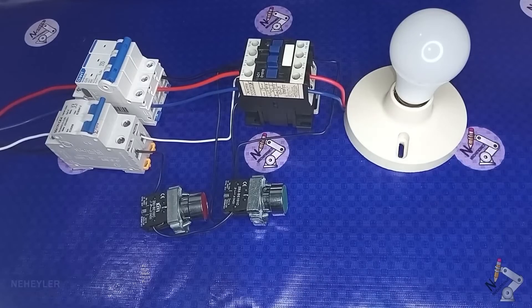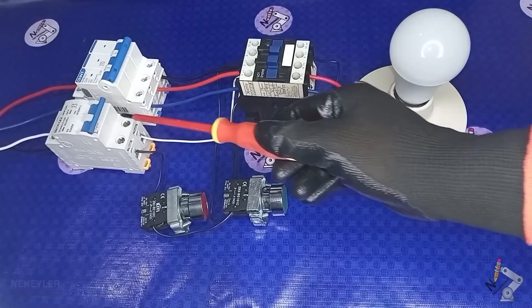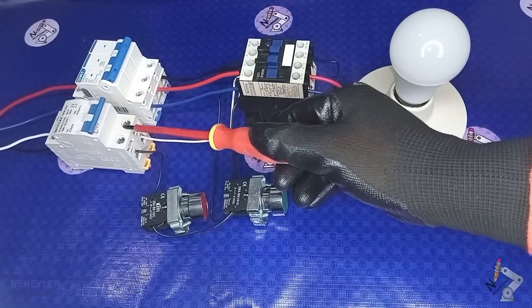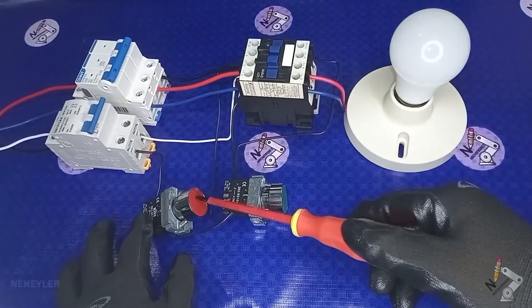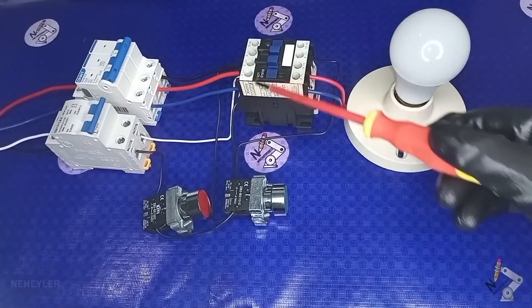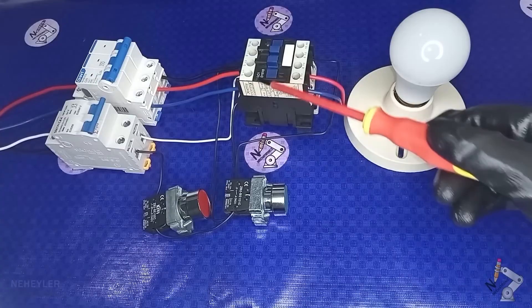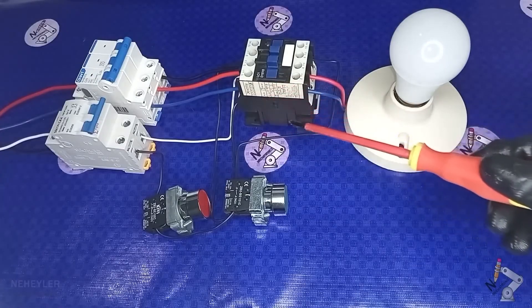Here we have all the elements connected as shown in the previous diagram. On this side we have the bipolar switch for the control circuit. We also have the stop button, the start button, and the contactor. These push buttons are connected to the contactor in such a way as to generate self-locking.